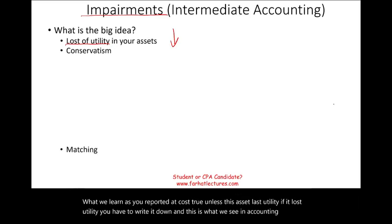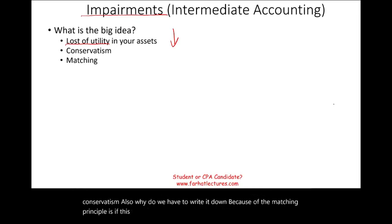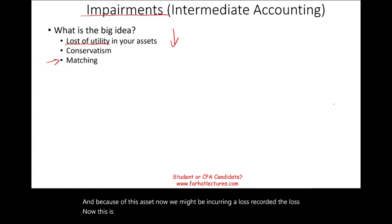Why else do we have to write it down? Because of the matching principle. If this asset is no longer serving us, and because of it we might be incurring a loss, we record the loss now. This is the matching principle — matching the loss to the proper period.